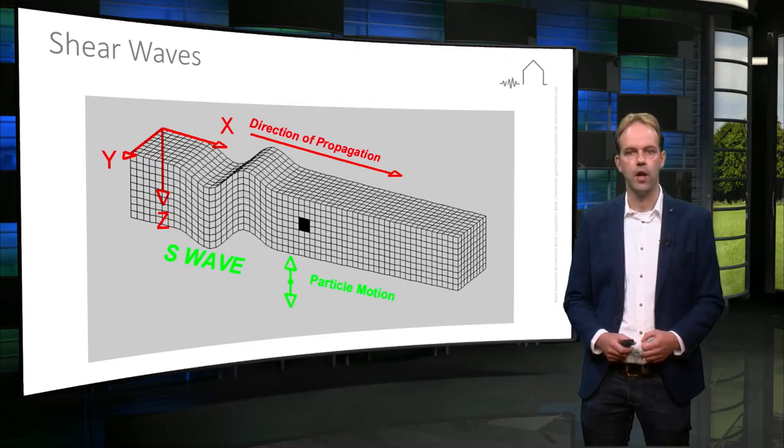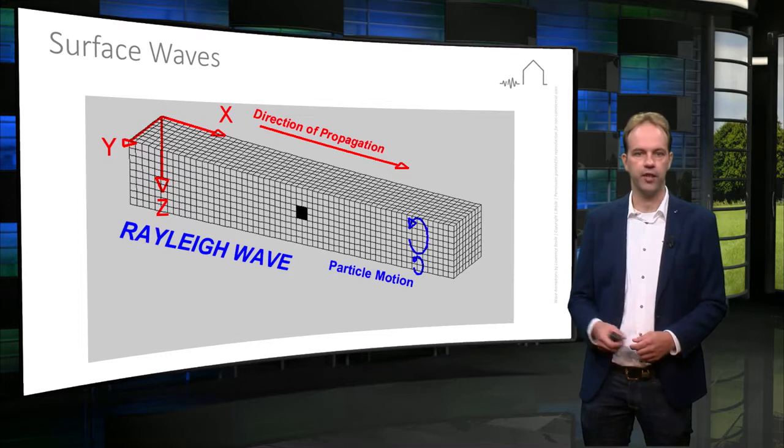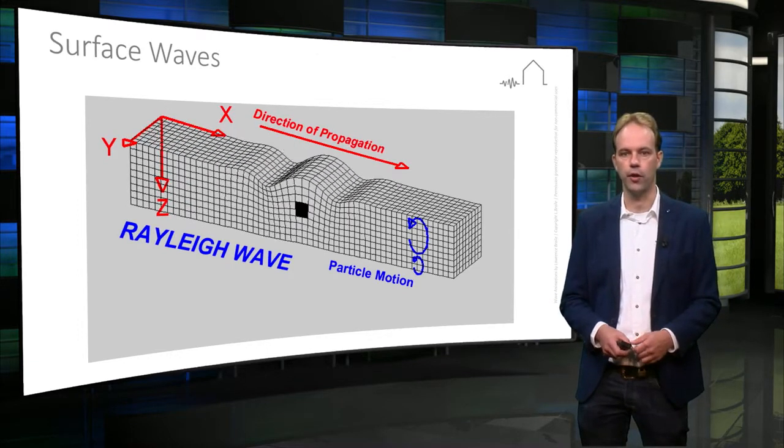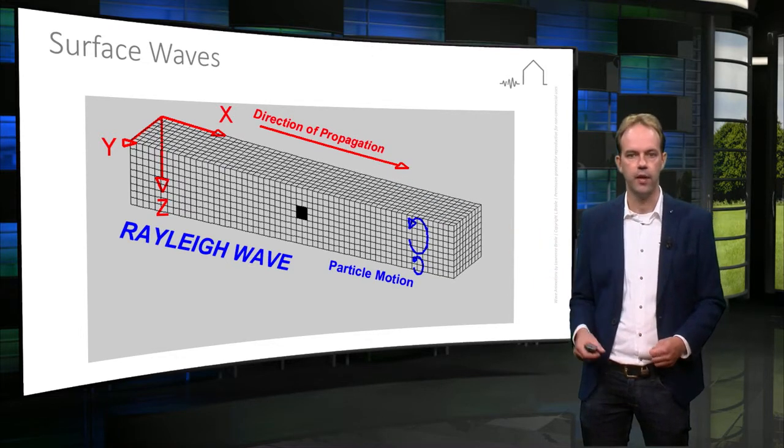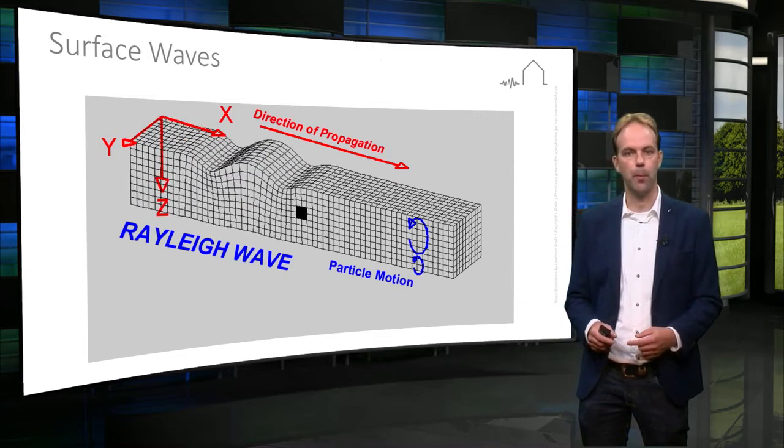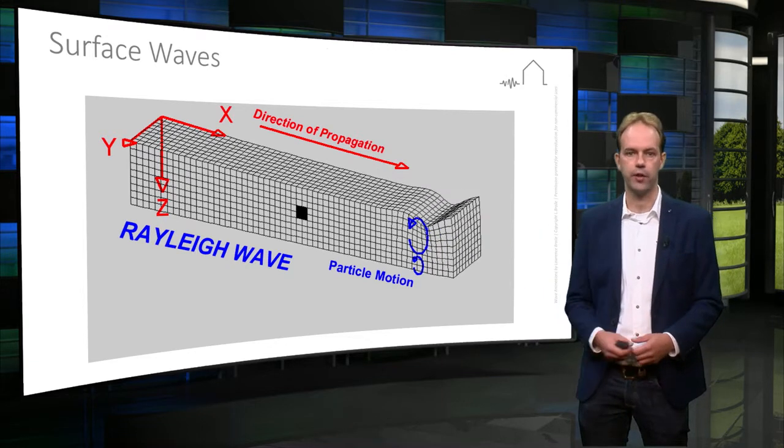P- and s-waves are body waves that travel through the earth. The third type of seismic wave are surface waves that travel only along the surface of the earth. The two important surface waves are the Rayleigh wave and the Love wave. They display more complex particle motion directions, both compression in multiple directions but also rotation of the particle motion.